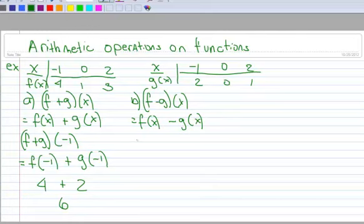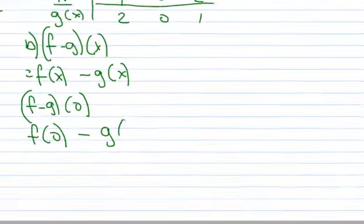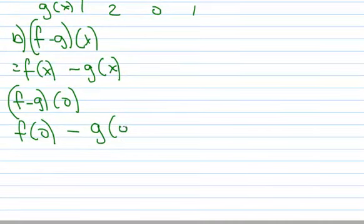I want f minus g at 0. So this means I evaluate f at 0, and then I subtract the evaluation of g at 0. So when I put 0 into f, it looks like I get out 1.